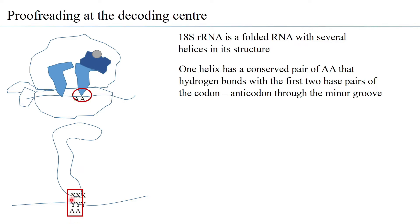The first two nucleotides of the anticodon interact with the first two nucleotides of the codon, and these two in turn interact with the conserved AA of the 18S rRNA. The 18S rRNA in the small subunit is associating with the mRNA, which in turn is associating with the anticodon of the tRNA — so tRNA, mRNA, and 18S rRNA are all interacting with each other. If the AA of the 18S forms hydrogen bonds with the codon-anticodon, this is the first checkpoint confirming that the correct tRNA has come and bound.